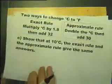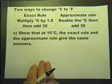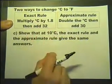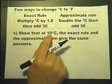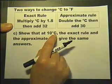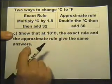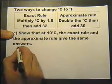In fact this question does continue with part C, so we've still got the two rules there. Show that 10 degrees centigrade—the exact rule and the approximate rule will give the same answers. So show it, let's do it.